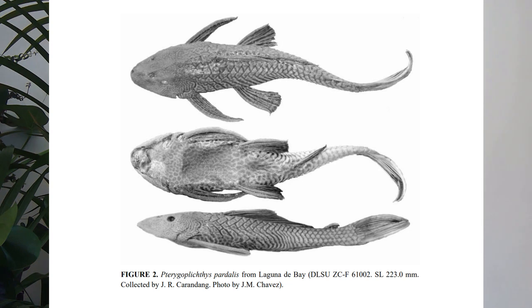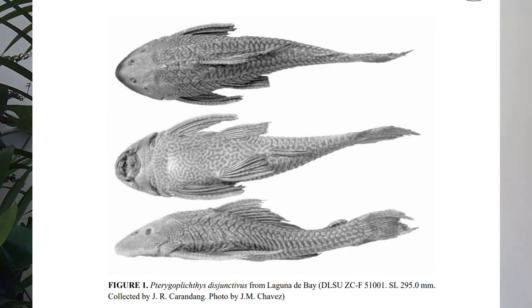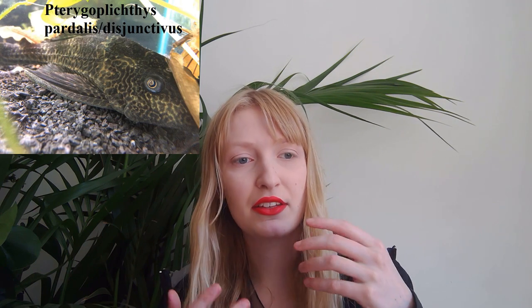So how do you tell the difference between the different Pterygoplichthys species? I'll cover the three or four most common ones, as I don't have reference photos for the rarer ones. Pterygoplichthys pardalis has a spotted abdomen, compared to Pterygoplichthys disjunctivus which has vermiculations on the abdomen instead — as shown in a scientific paper. A lot of species do have vermiculations, but the overall colouration and patterning on the fish is usually different.